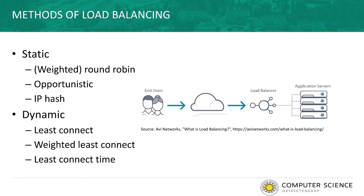Load balancing is the distribution of a workload across many web servers. It is typically used for balancing HTTP traffic over multiple servers acting together as a web front-end. This means the processing load can be shared across many servers rather than being limited to a single server, increasing performance during times of high activity. Moreover, load balancing increases the reliability of web applications: if one web server fails, traffic can be redistributed to other servers without any interruption of service.